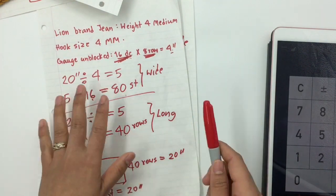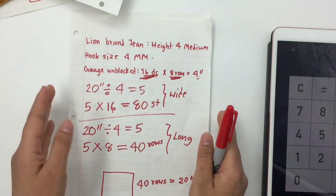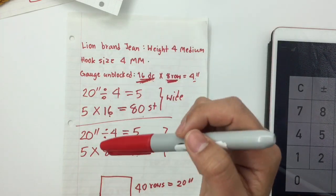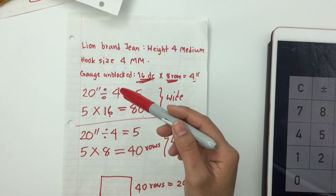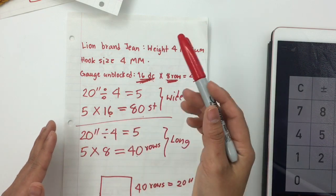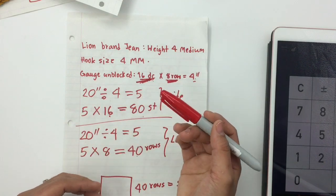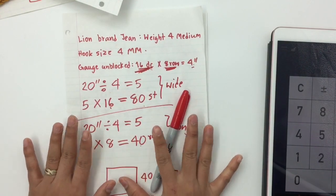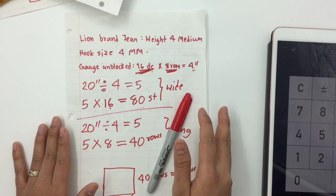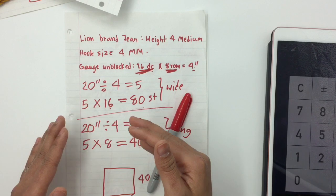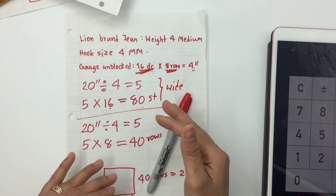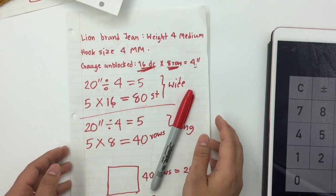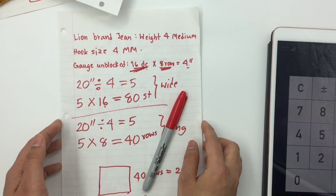I hope you guys understand. You can make your own pattern and also adjust your own size using this method. Most of my patterns have the gauge and measurement in the description below — you can check that out to adjust your size or make it for someone else. I hope this video is helpful. This is how I do mine — if you have a suggestion or want to do it differently, please leave a comment below. Thank you so much for watching, and I'll see you in the next video. Bye-bye!